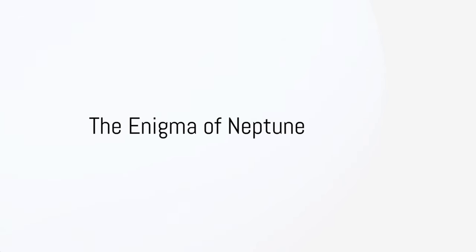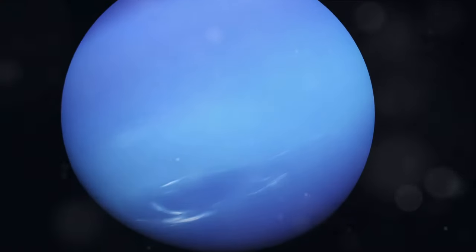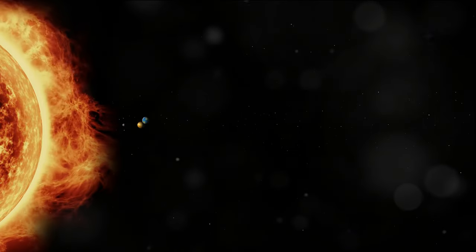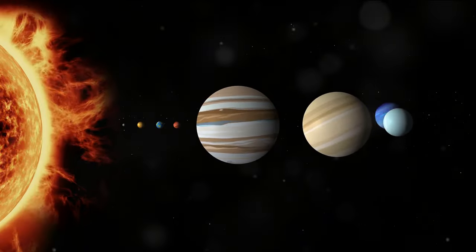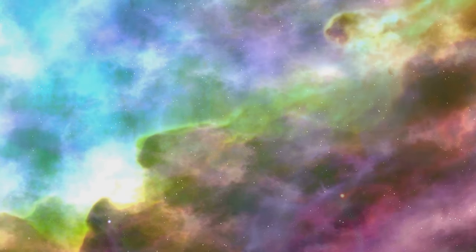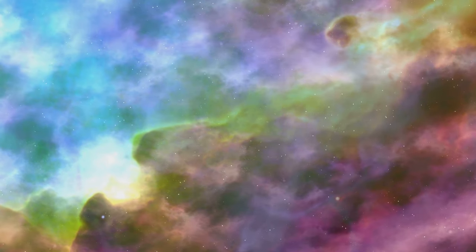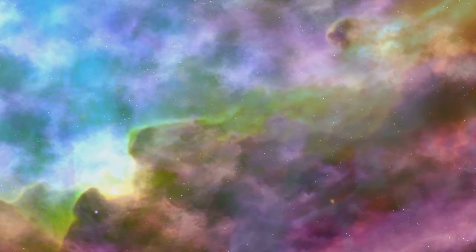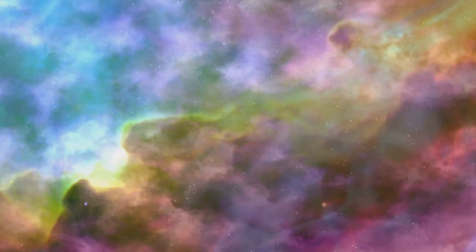Have you ever wondered why Neptune, the eighth planet of our solar system, is so blue? This icy giant, nestled in the outermost reaches of our solar system, is a world of intrigue and mystery. Its signature blue hue is as captivating as it is enigmatic, a testament to the complex chemical reactions occurring in its thick, stormy atmosphere.